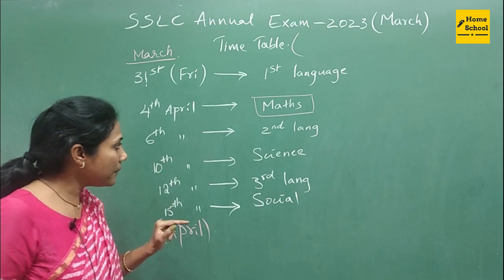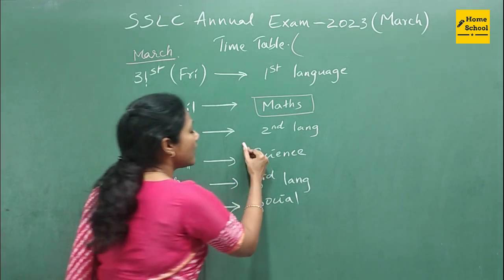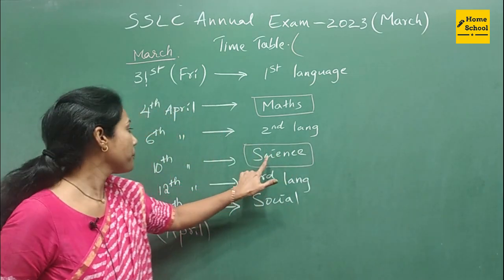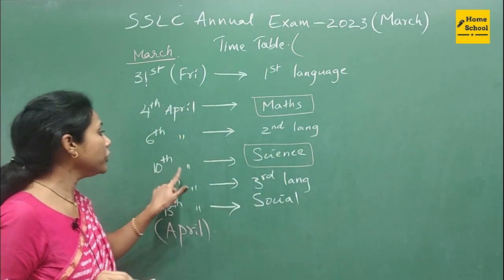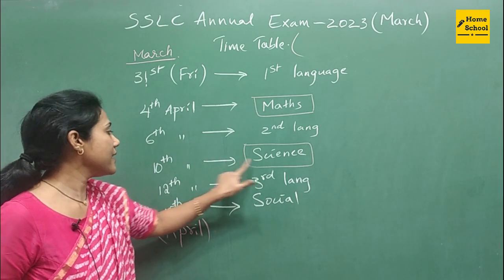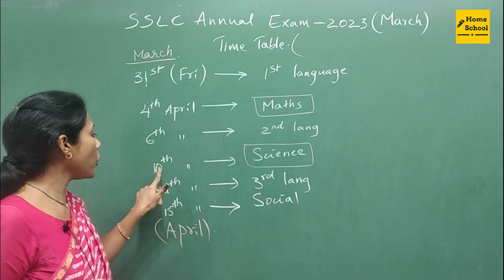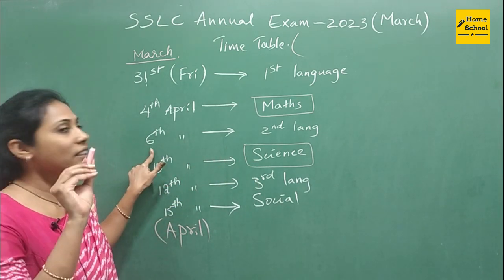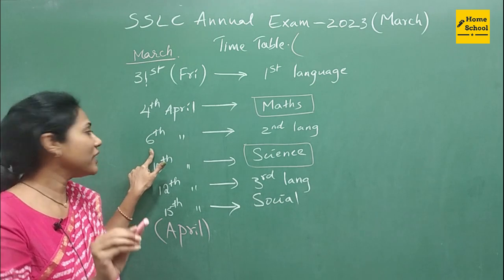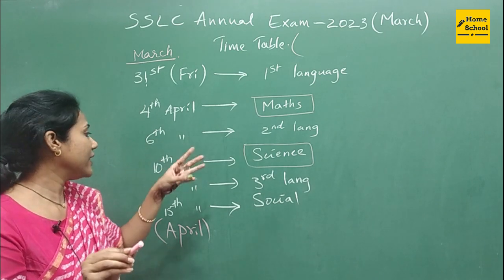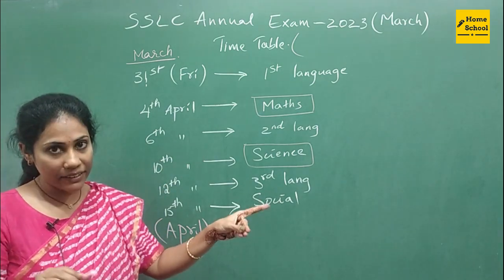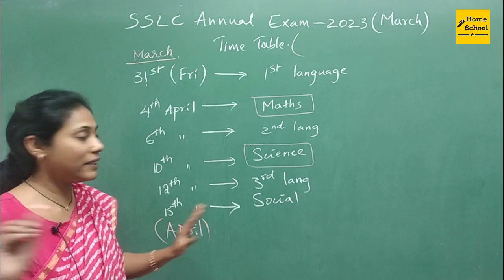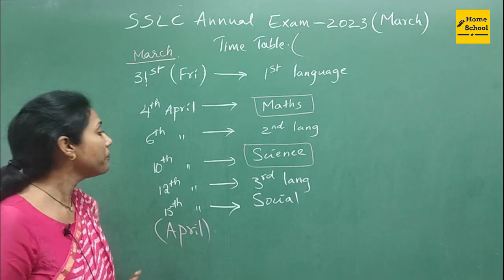The next examination is again a core subject — Science. You are going to give your Science examination on 10th April. So again you have a gap of three days: 7th, 8th, and 9th. Three days of gap — you can prepare in a better way.